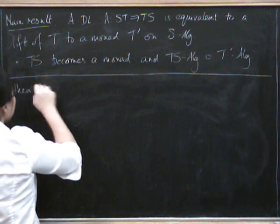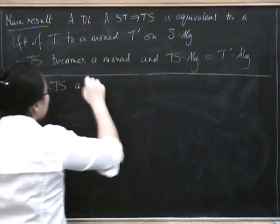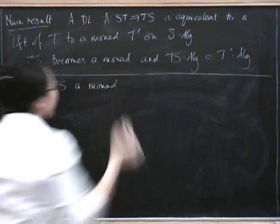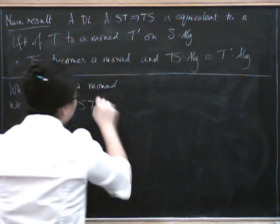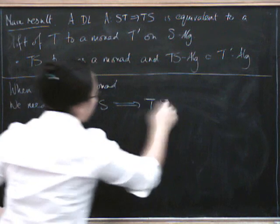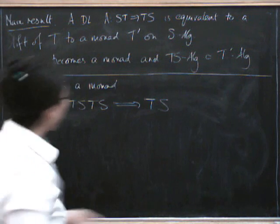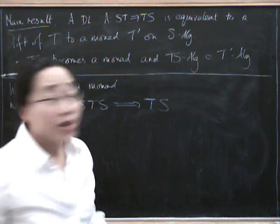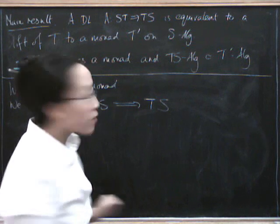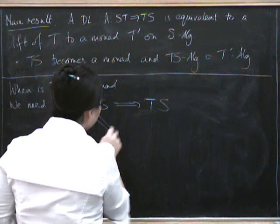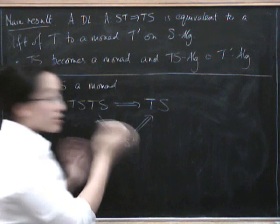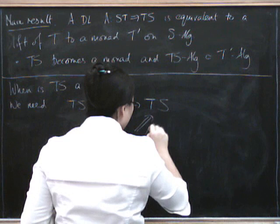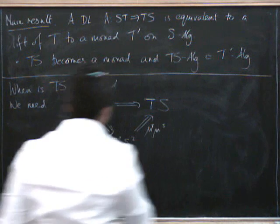We'd have to - let's say, when is T∘S a monad? We need a multiplication. We need something from T∘S∘T∘S to T∘S. Do we necessarily have such a thing? Well, if only we could move S over T, then everything would be okay. Because then we could move S over T, and we'd get T squared S squared, and then we could just hit it with the usual multiplication for T and multiplication for S.